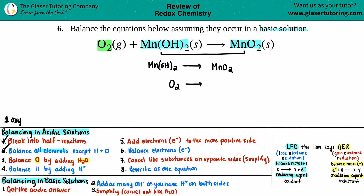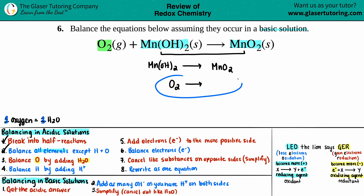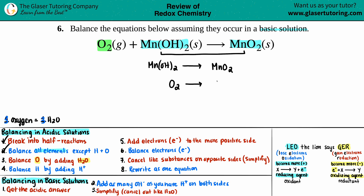Oxygen is always balanced before hydrogen. If you need to balance one oxygen, you add one H₂O. If you need two oxygens, add two H₂O's; three oxygens, add three H₂O's. On the first equation, I have two oxygens on the left and two oxygens on the right — they're balanced, no H₂O needed. But for the second equation, I have two oxygens on the left and no oxygens on the right, so I will add two H₂O's to the right side.